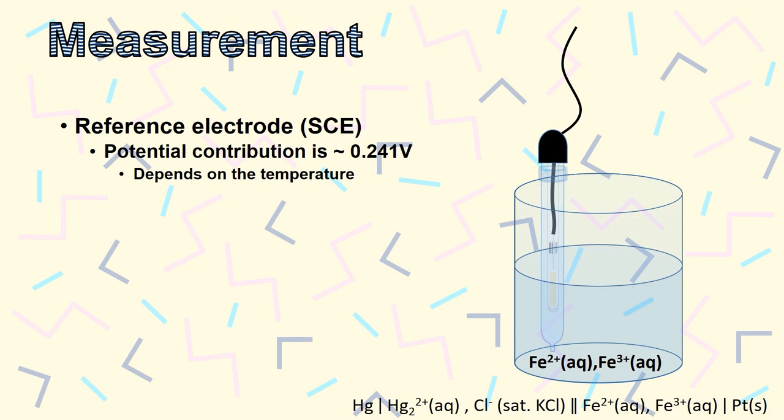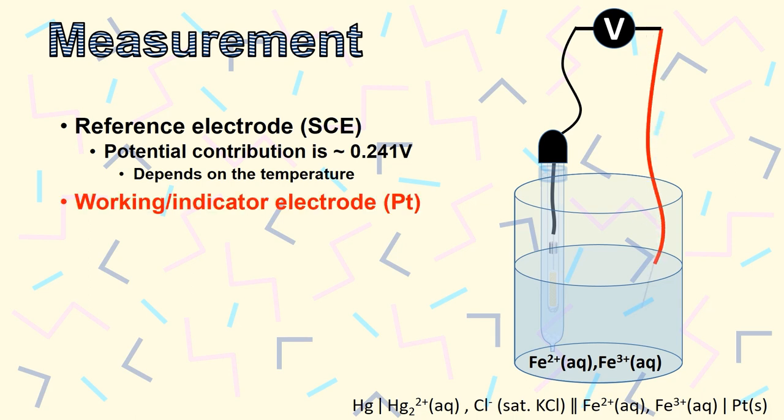A potentiometer needs both electrodes to measure a potential difference. So, we'll next add a platinum wire as the working electrode. Remember that since the contribution to the potential from the reference electrode is constant, any changes at the potentiometer are due to fluctuations in the iron concentration. The measurements made by the meter represent the potential difference between the working and reference electrodes.